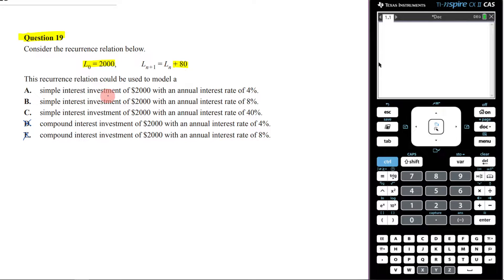So now the case is, is it a simple interest investment of 2,000 with an annual interest rate of 4%? Remember, the way that simple interest works is that you're simply earning a percentage of that initial amount. So in this case, what we need to figure out is what is 80 as a percentage of 2,000.